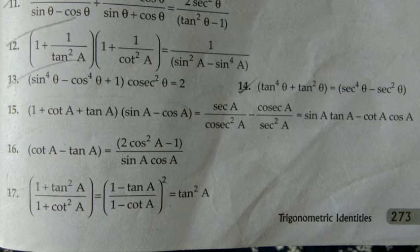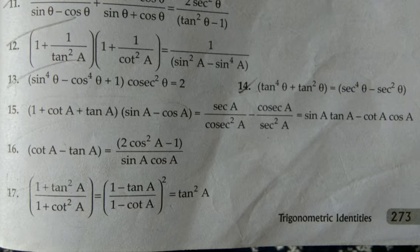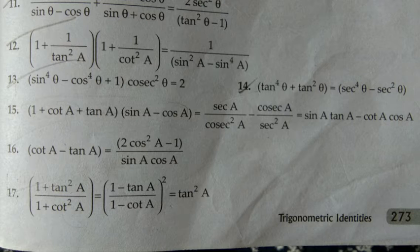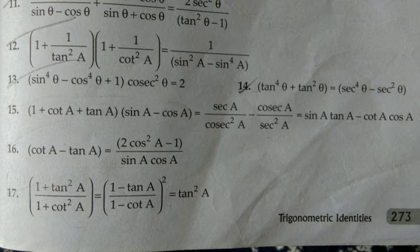Okay, number 15. This question has three parts: part one, part two, and part three. The expression involves sin a minus cos a. After multiplying and simplifying, terms cancel out, and we get sin square a by cos a minus cos square a by sin a.